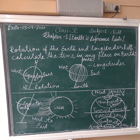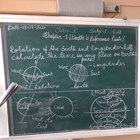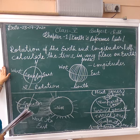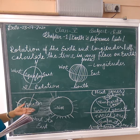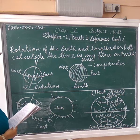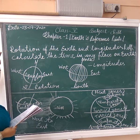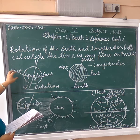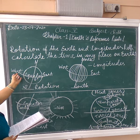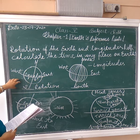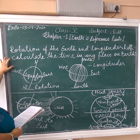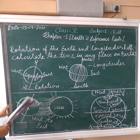So these are the longitudes. Rotation of the Earth and longitudes help calculate time in any place on Earth. Our Earth is rotating, and it rotates on its axis, creating day and night. So rotation of the Earth and longitudes together are used to calculate time in any place on Earth.